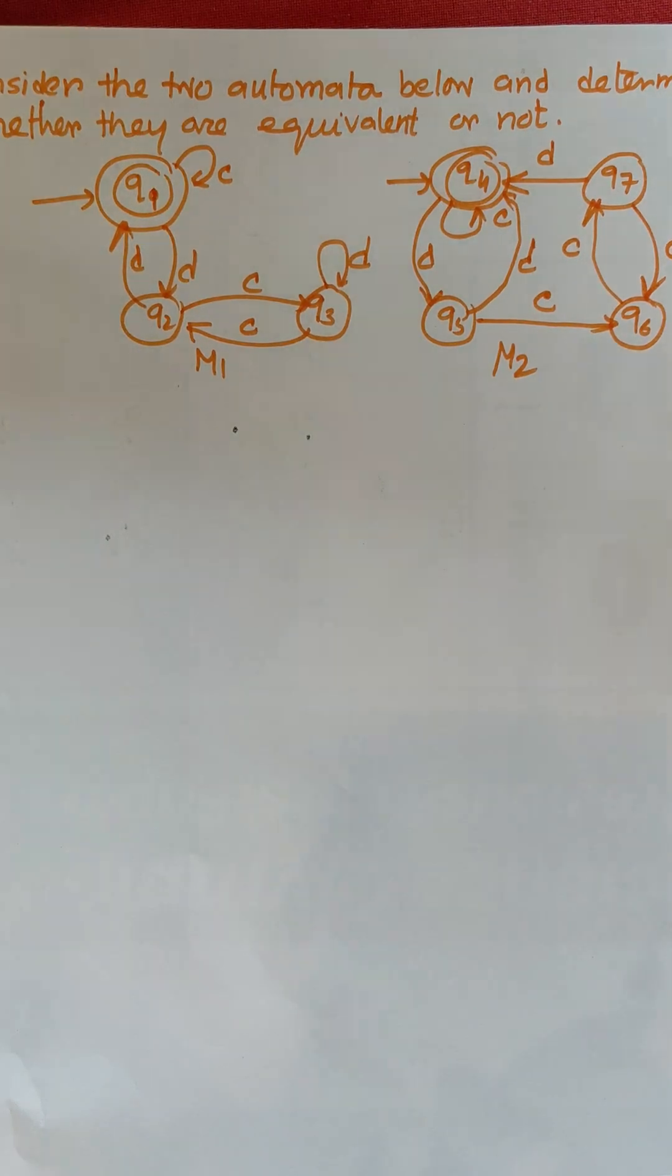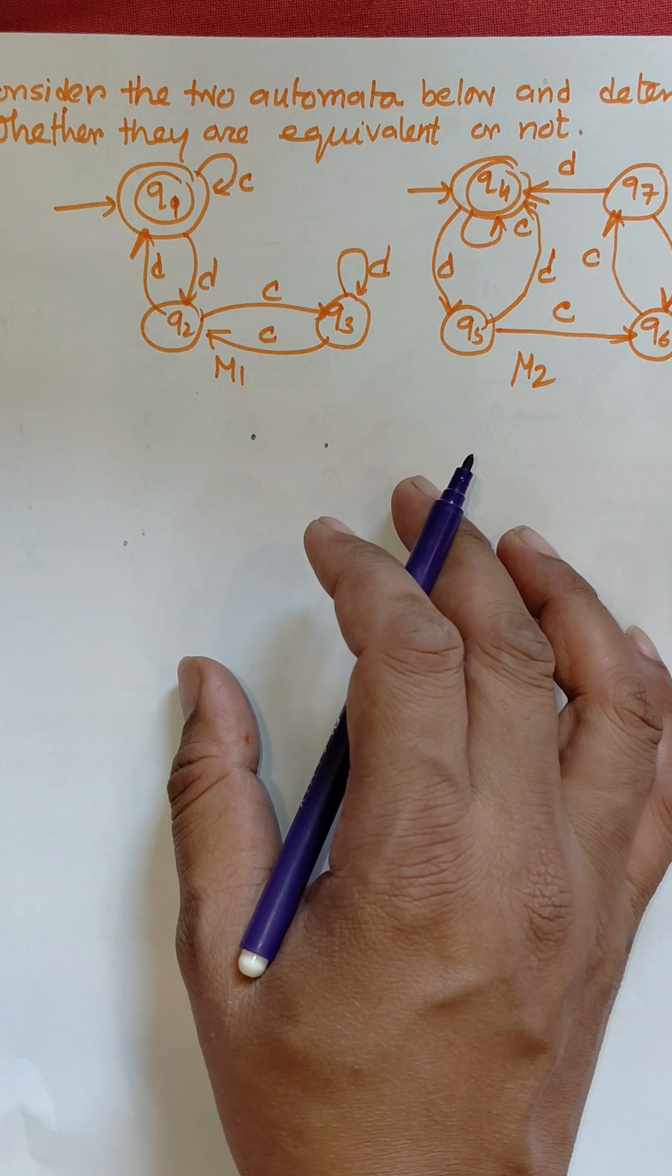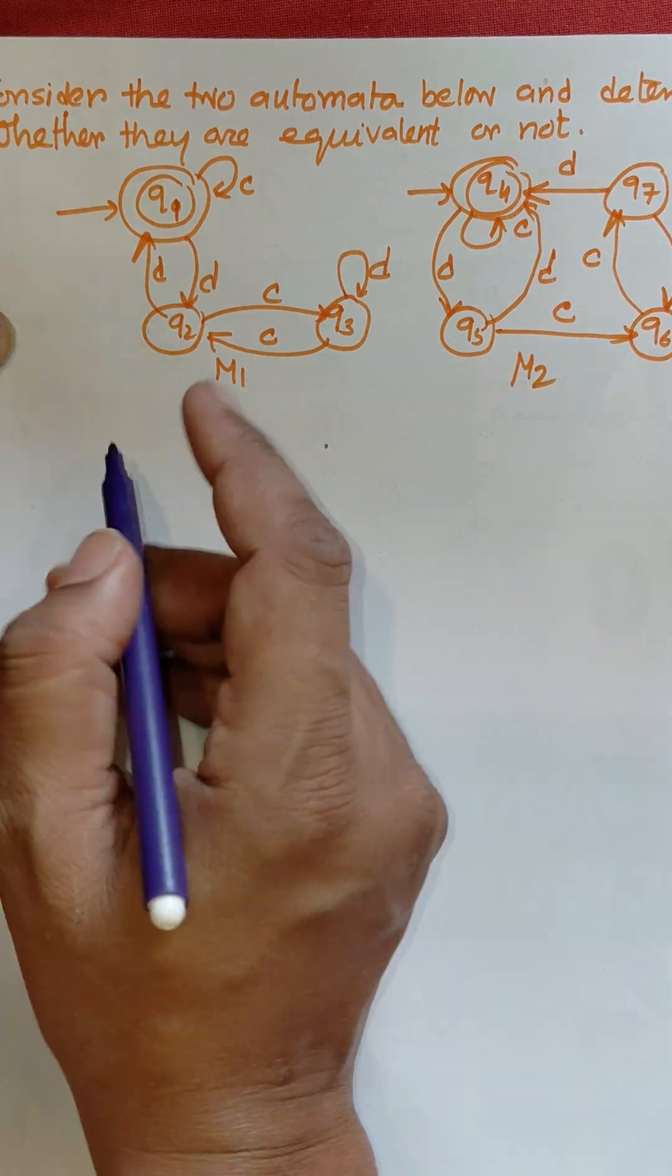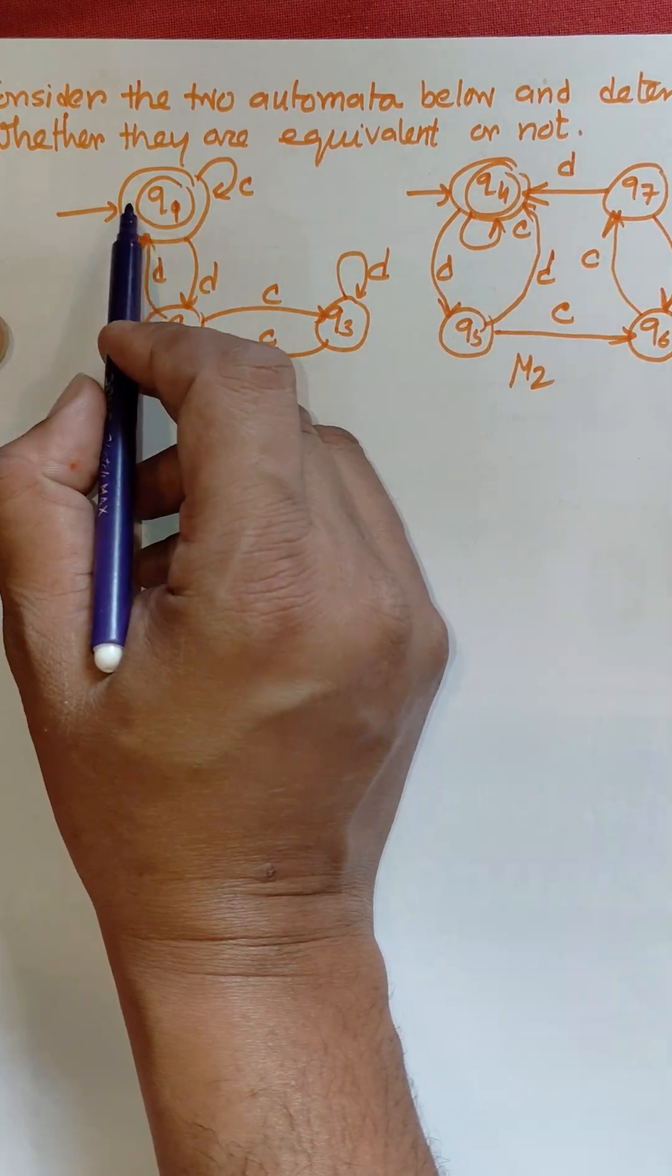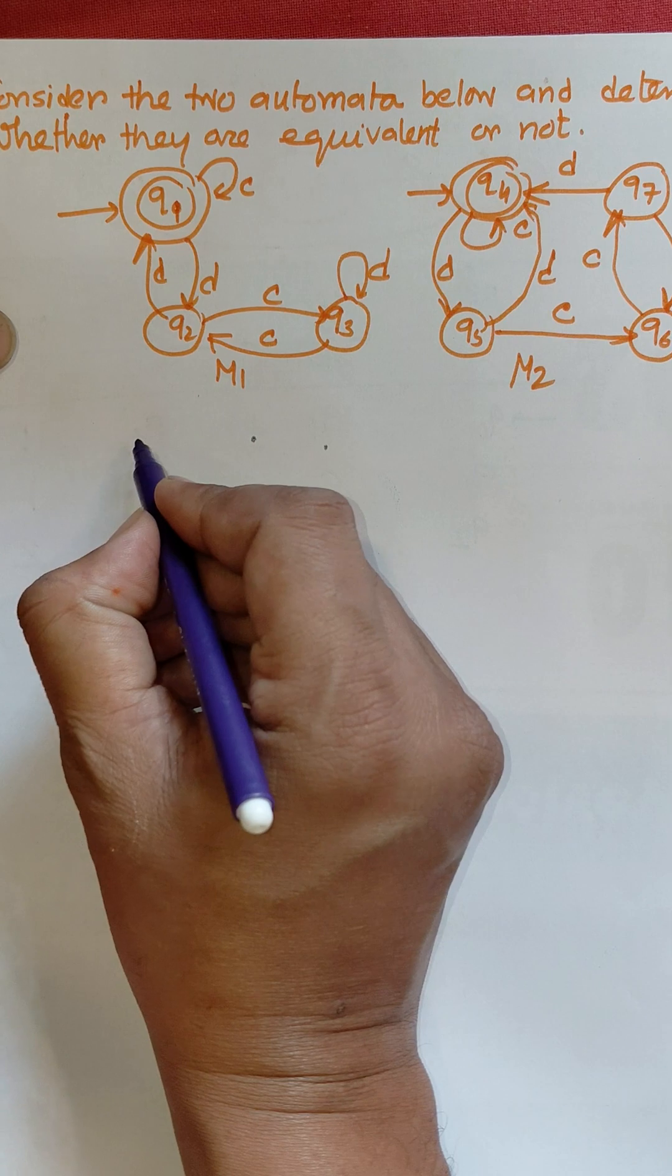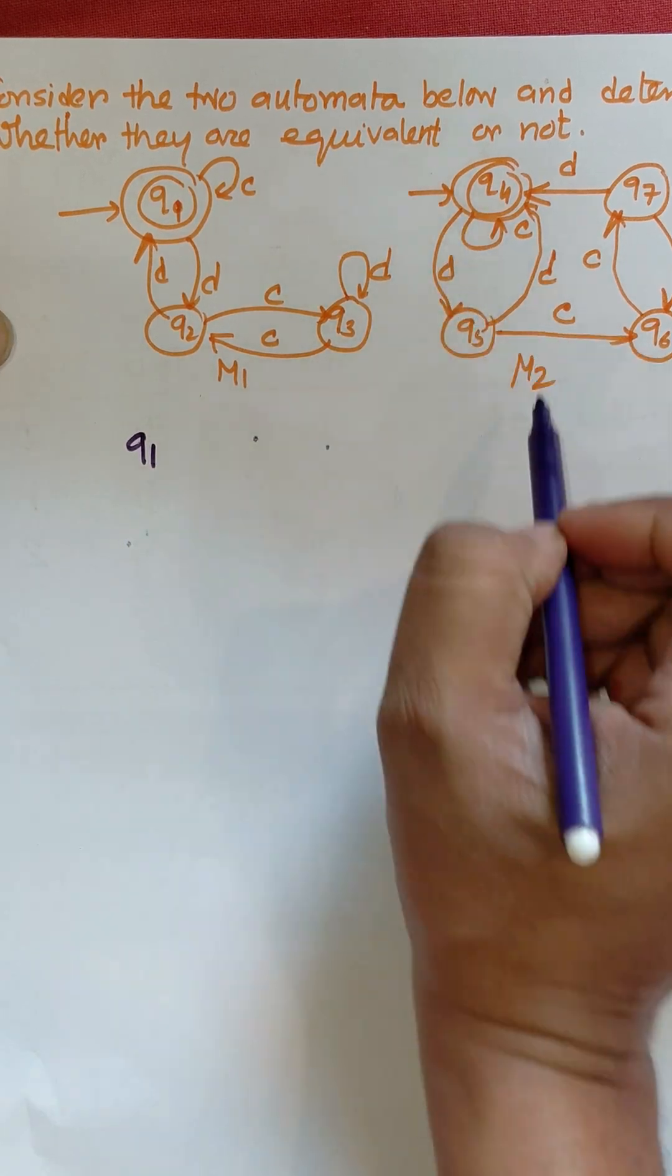Hi everybody, in this video I am going to check whether the given automata are equivalent or not. First of all, we need to consider the following table. The initial state of automata M1 is q1, and the initial state of the second automata is q4.